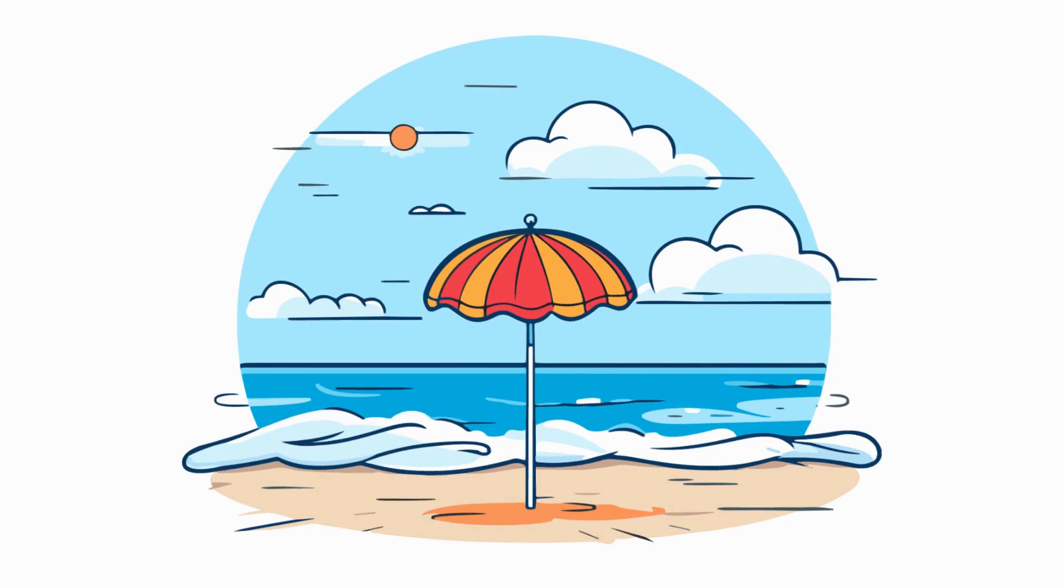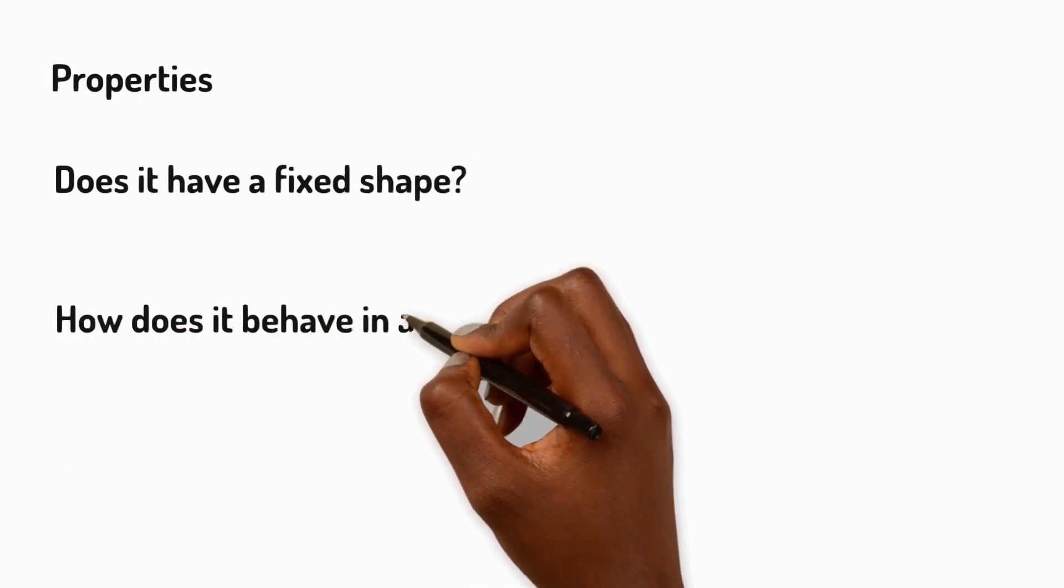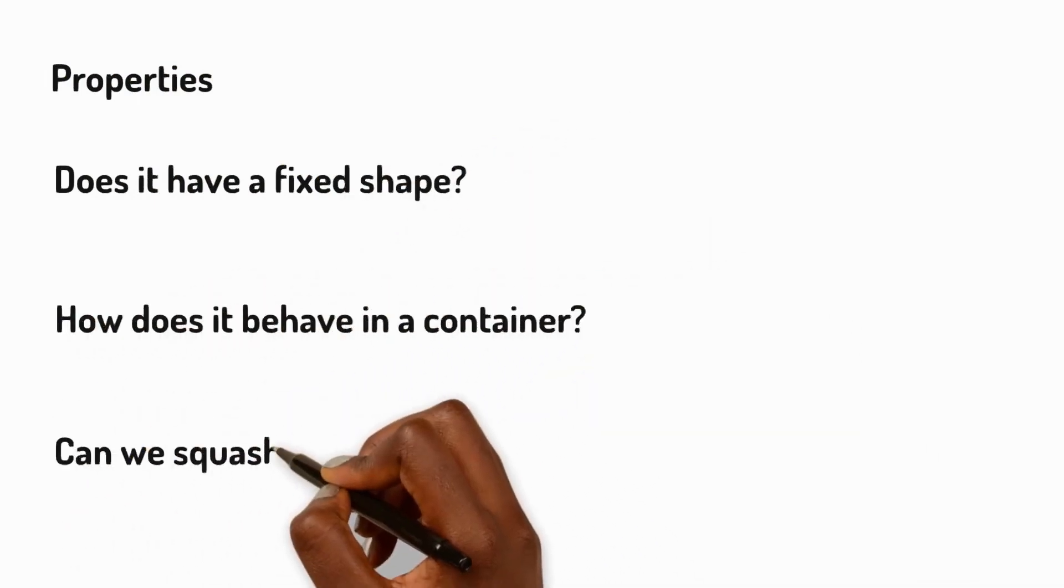To work out the state of something, we need to look at a few things. These things are called properties. For example, does it have a shape that stays the same? What happens when we put it in a container? Can we squash it?